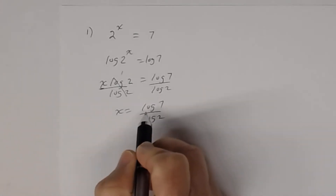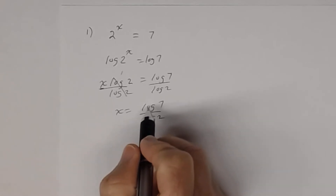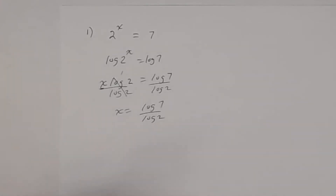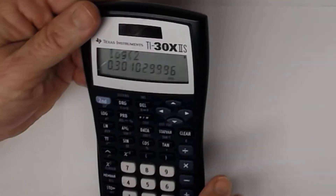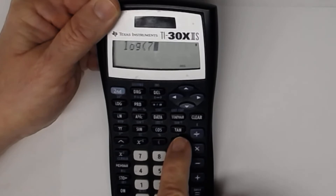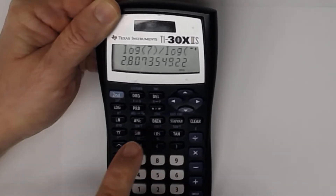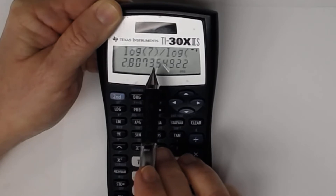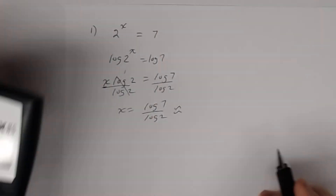Some students want to cancel the 'log' symbols — be careful, that's not valid. log(7) and log(2) are separate numbers. On your calculator: log(7) ÷ log(2). Rounded to three decimal places — look at the digit after the third decimal, since 3 < 5 the digit stays — the answer is approximately 2.807.